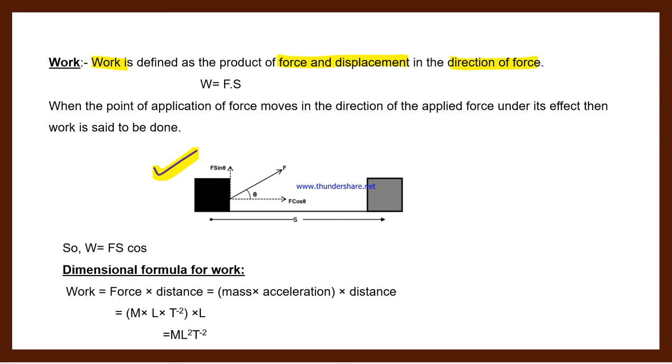Suppose you apply force in this direction. Initially at point A, when it displaces, it reaches point B. This means you applied some force F, and there is some displacement S. Some displacement occurs in a particular direction, and in the direction where force is applied, work done is counted.